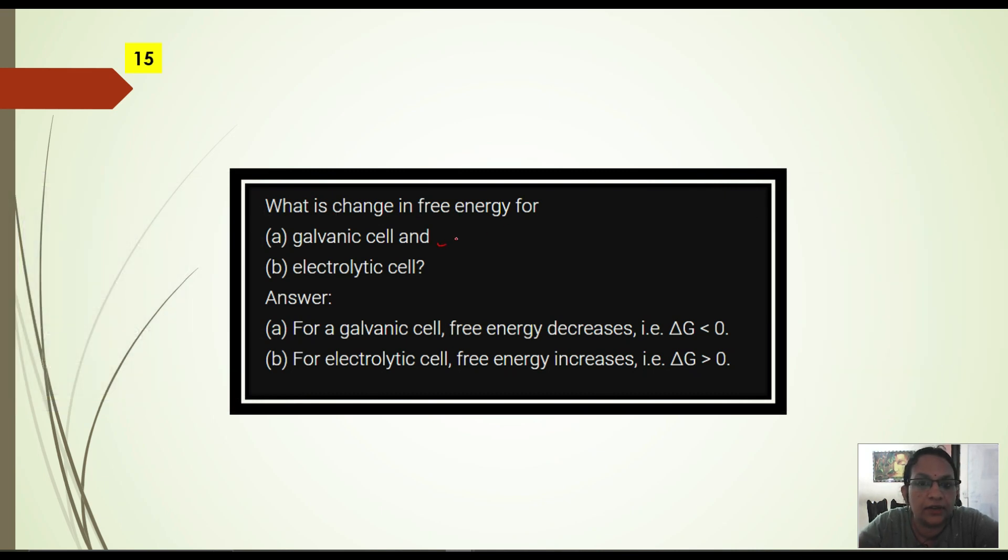What is the change in free energy for galvanic cell? For galvanic cell free energy decreases, that means delta G is negative. But for electrolytic cell delta G is positive. Remember this.